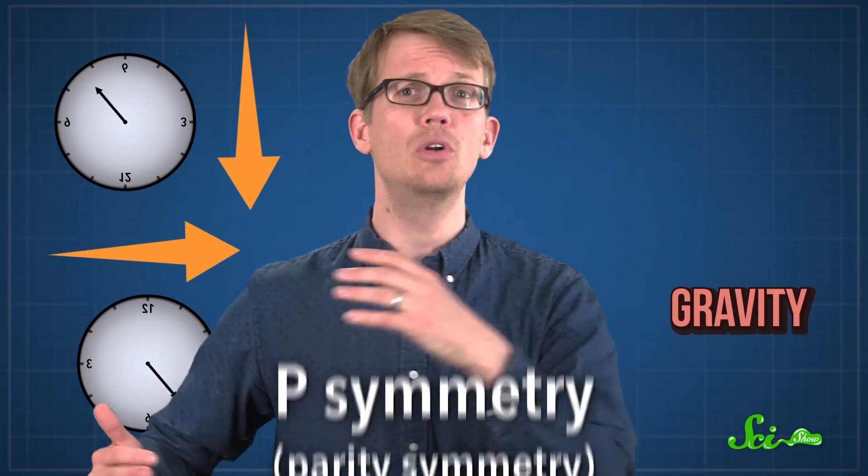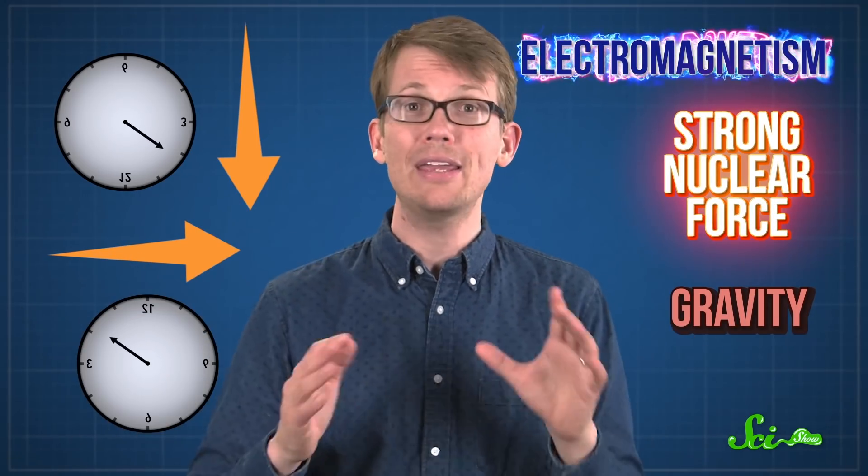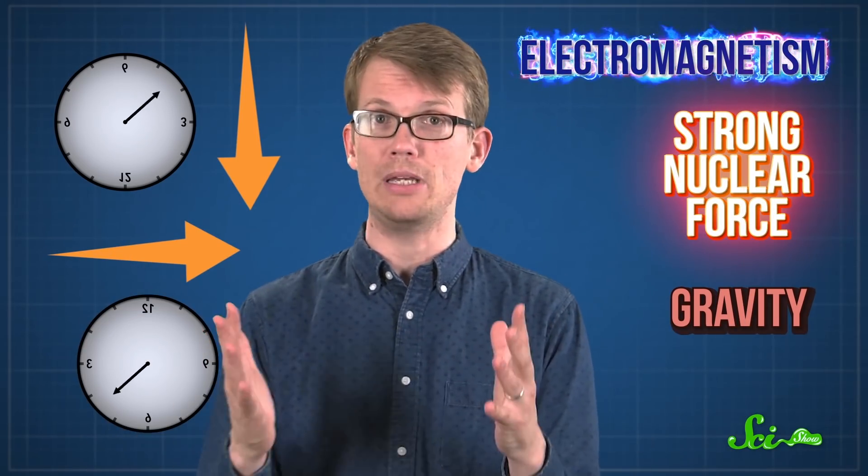Experiments showed that gravity would work the same way, and so would electromagnetism and the strong nuclear force, making a good case for P-symmetry being true. But the weak force has to be different.